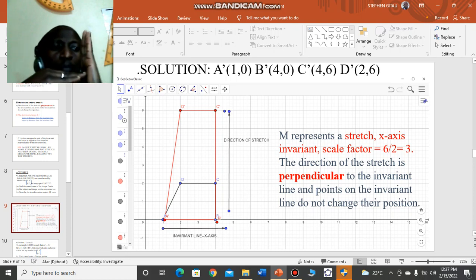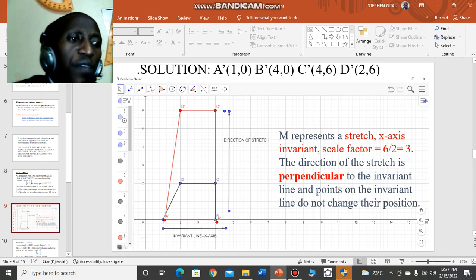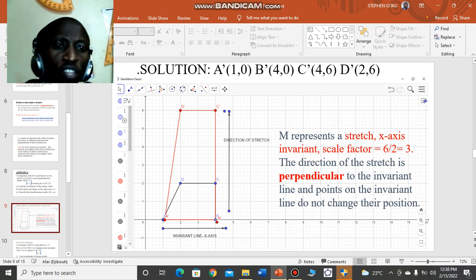The invariant line is perpendicular to the direction of stretch. So indeed, we are saying M represents a stretch, x-axis invariant, scale factor of positive 3, with the direction of the stretch being perpendicular to the invariant line, and points on the invariant line are not moving or changing their position.